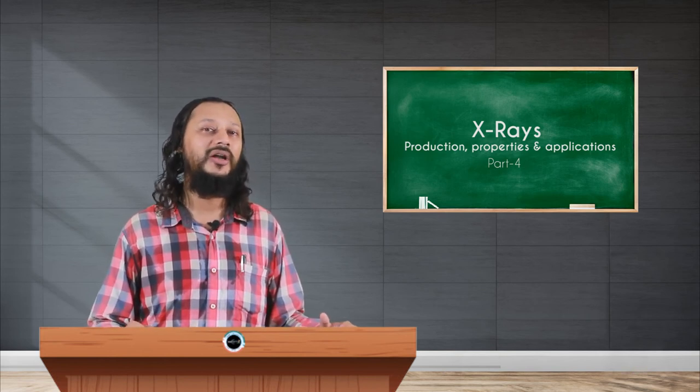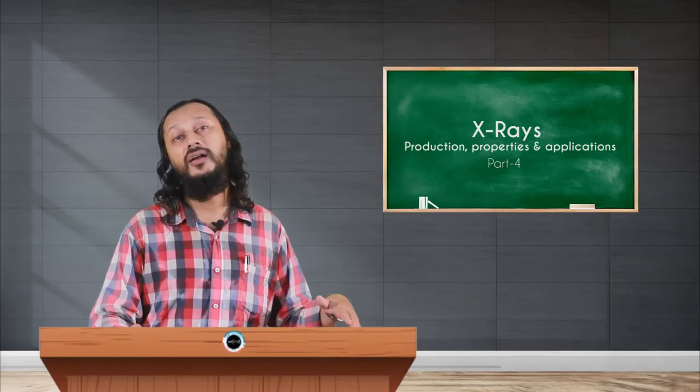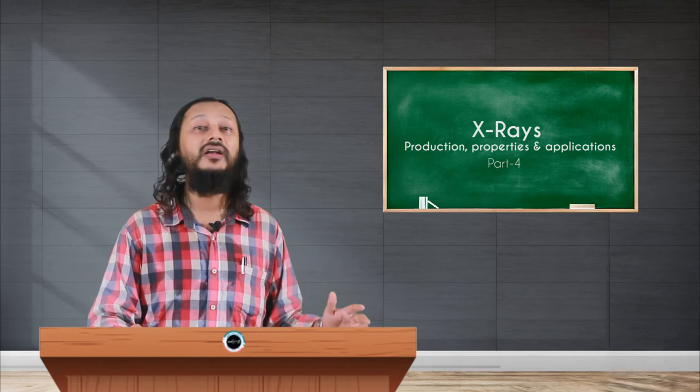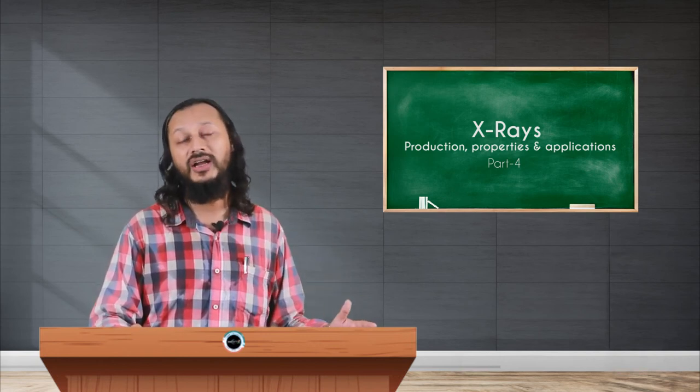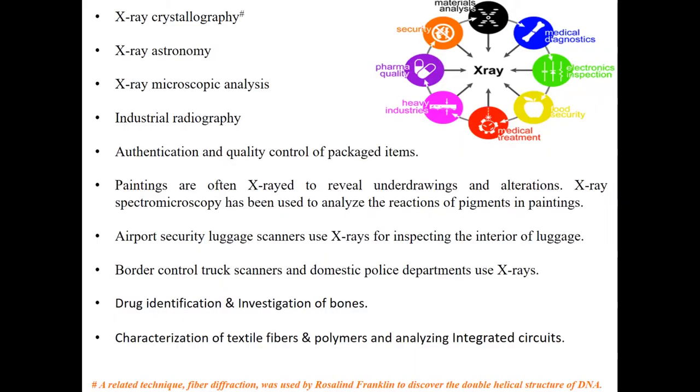X-rays are used to study the quality control of materials as well. Paintings are often X-rayed to reveal underdrawings, alterations that might have taken place. X-ray spectroscopy has been used in analyzing the reactions of pigments that are used in paintings. So different paintings are chemically different compositions, therefore they react differently on canvas. So we can estimate a lot of forgeries and underdrawings that have happened in a painting using X-rays. Airport security luggage scanners use X-rays for inspecting the interior of luggage. Security, they use X-rays for scanning. Metal detectors, they use X-rays as well. Border control, these truck scanners and domestic police departments, they use X-rays as scanners and other devices that can be concealed.